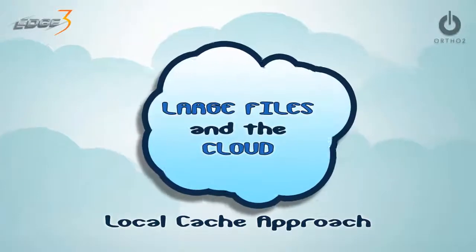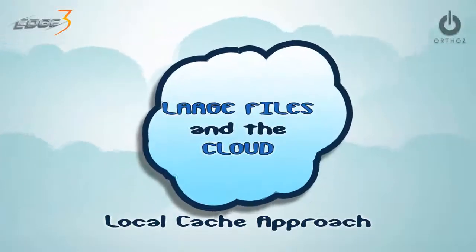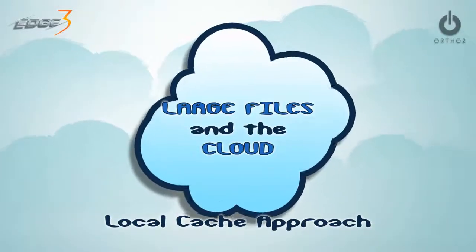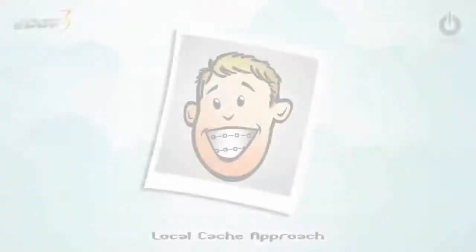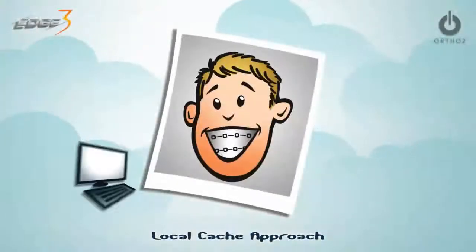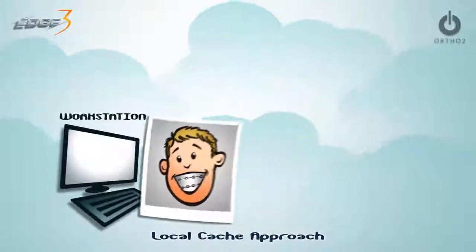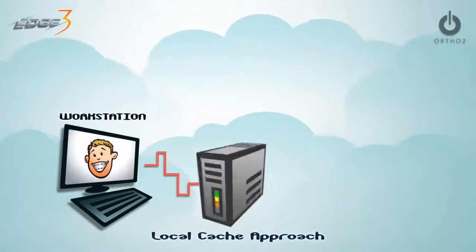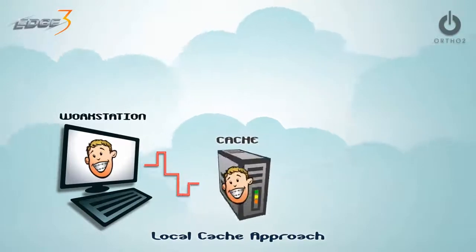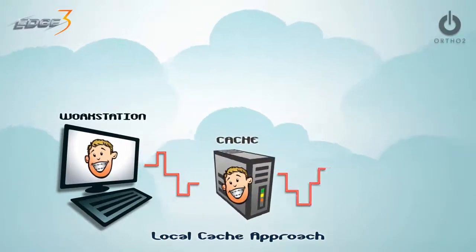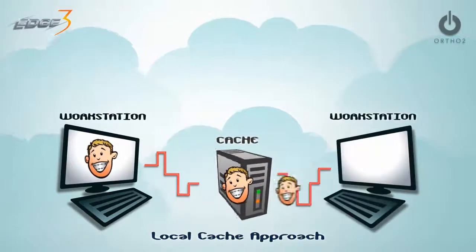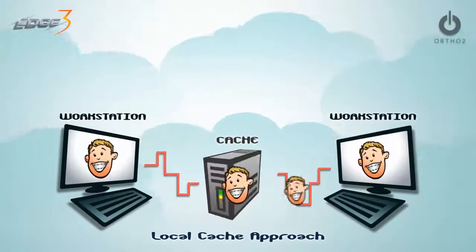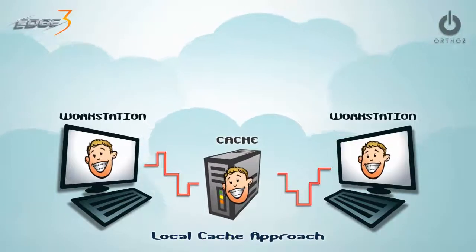Let's see why a cloud-only approach may not be best for large files. Before the cloud, large images were sent to a local server, or cache, where they were instantly available locally. However, this approach offered no remote access.